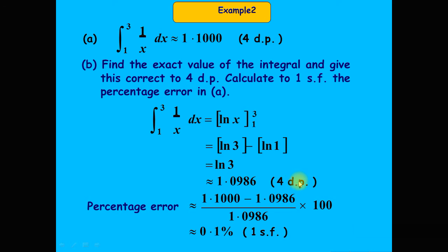The error equals the exact answer minus the approximate answer. The percentage error = (approximate result − exact result) / exact result × 100. Calculating this gives a percentage error of 0.1%, which is one significant figure.